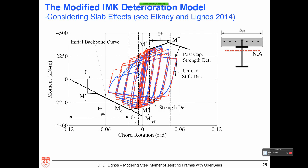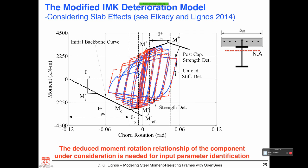You could also consider slab effects — we've done this recently. You can change the rate of degradation if you have a slab contributing to composite action. When the slab is in compression, the beam strength is larger than in the direction where the slab is in tension. This is reflected in calibration examples shown here. But again, you have the same problem: you need a moment-rotation relationship for the component under consideration, otherwise your input parameters are not reliable.